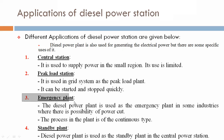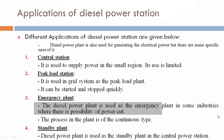Third, emergency plant. The Diesel Power Plant is used as an emergency plant in some industries where there are possibilities of a power cut.